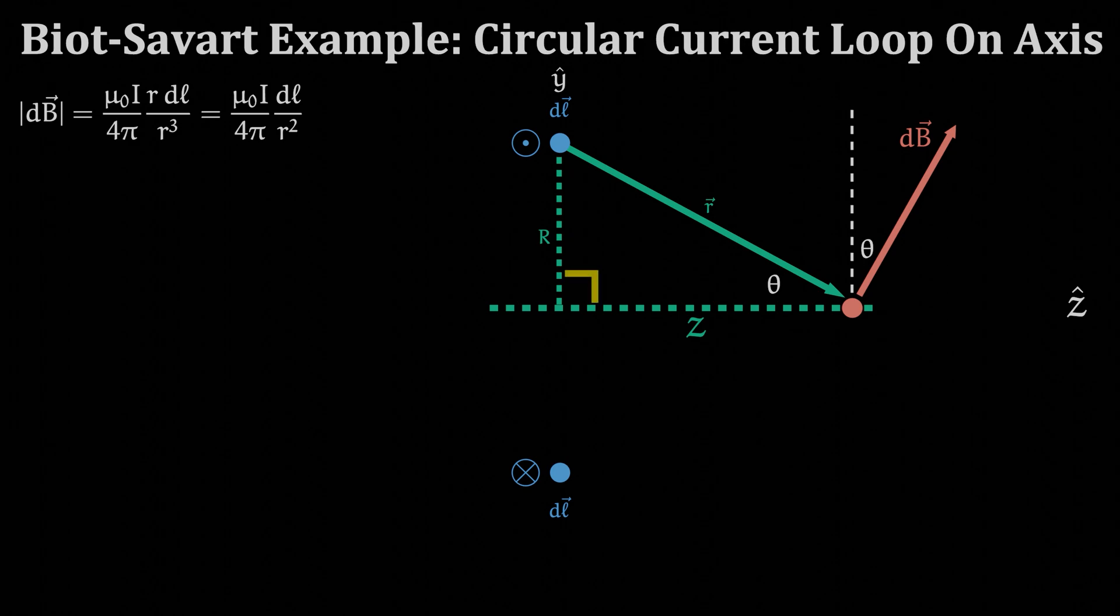We can also use the fact that this triangle in green is a right triangle to get a relationship between vector r, the radius capital R, and the distance z. With this we can replace the r squared in our Biot-Savart equation. We're doing this because we're more interested in having the variable z in our final equation rather than little r.